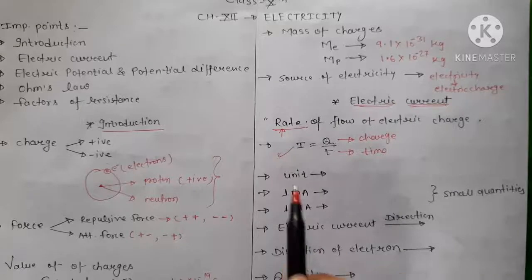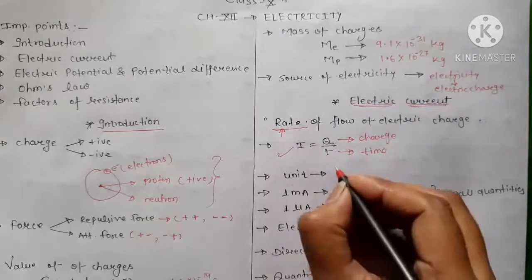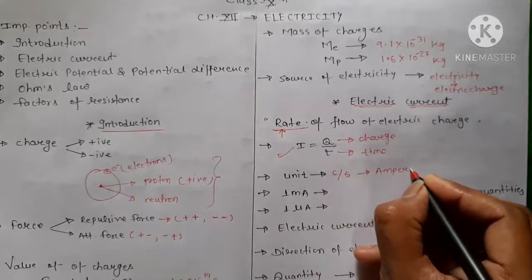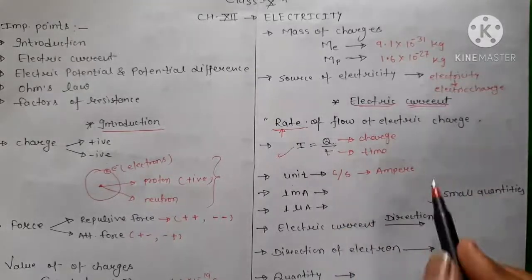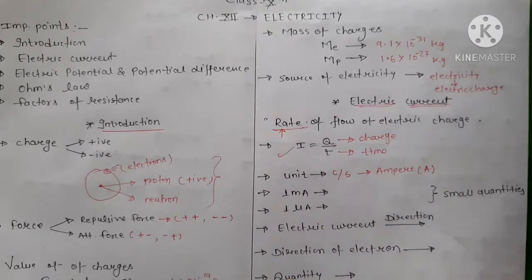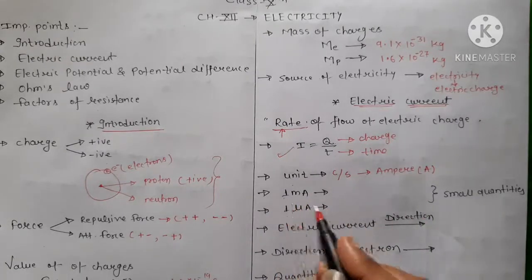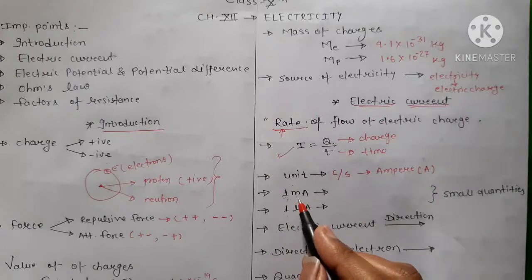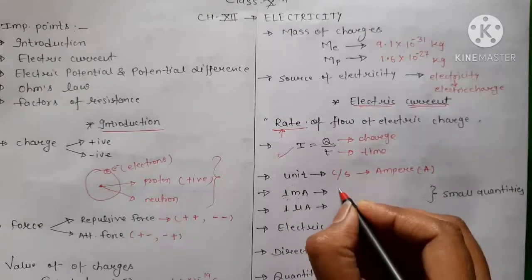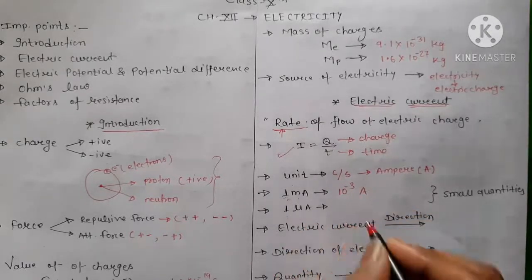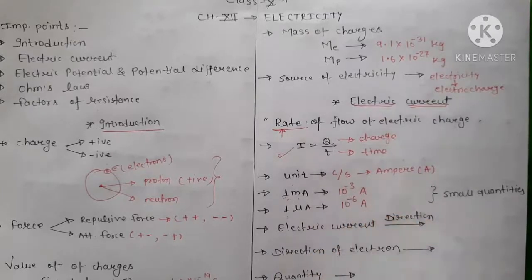Now talking about small quantities — these will be useful in numericals. First is one milli-ampere and second is one micro-ampere. To convert one milli-ampere to ampere, you multiply by 10⁻³. And to convert micro-ampere to ampere, you multiply by 10⁻⁶.